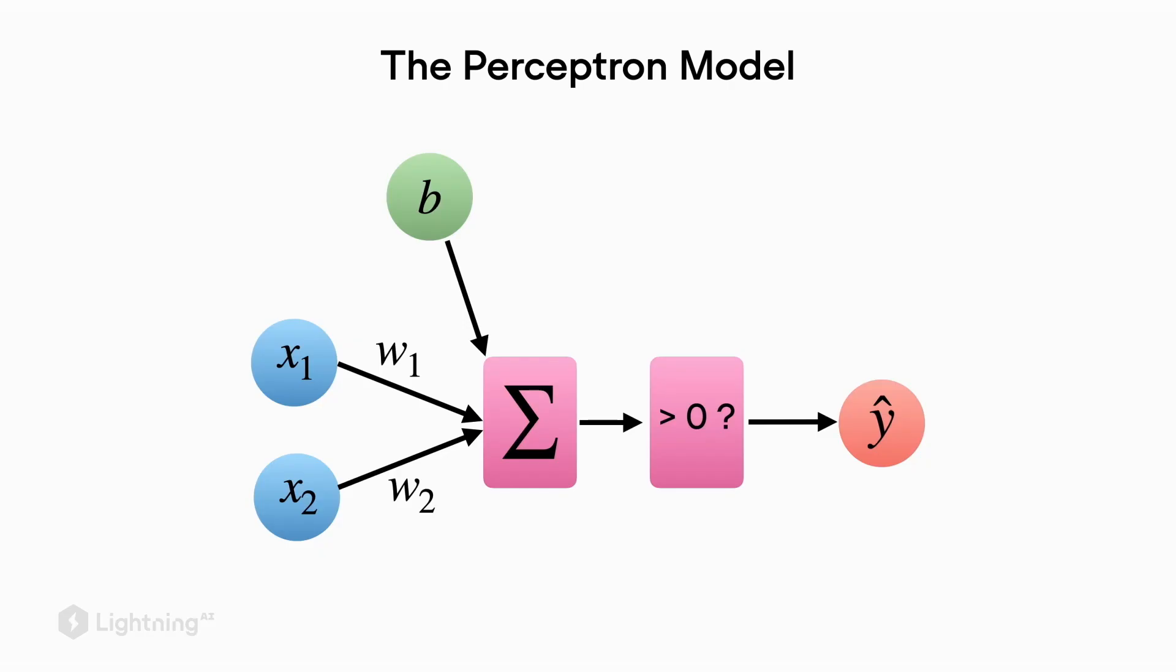Here's again the illustration of a perceptron we've seen earlier, where we compute the weighted sum based on the inputs and model parameters. Then we have a threshold function that checks whether the weighted sum is greater than zero.